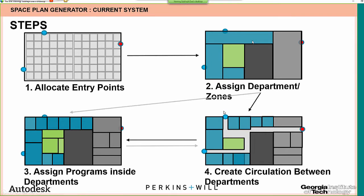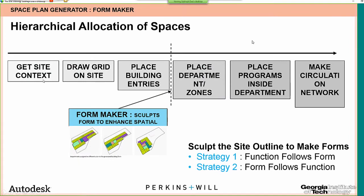To summarize the sequence: you get the site context, draw a grid on the site, place building entries, place departments, place programs inside the department, then make a circulation network. One thing missing is that architects have to respect building code regulations in the form of site coverage — you can only cover 60–70% of the site. So I implemented a Form Maker component into the operation sequence. It takes site coverage as user input and finds the best possible form of building outline.